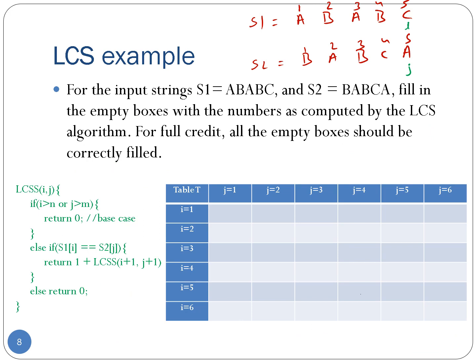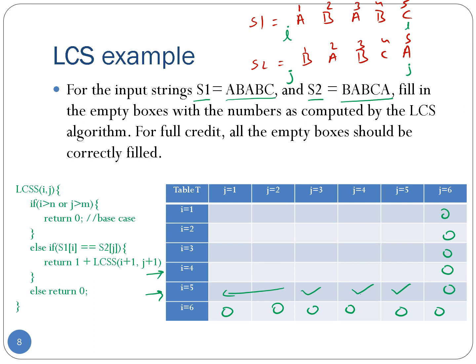Let's take an example to understand how this dynamic programming table fills out. Our input strings are s1 = a, b, a, b, c and s2 = b, a, b, c, a. Both strings have length 5, so the table is 6 by 6. We start by filling sentinel values: the last row (i=6) and last column (j=6) are all zeros. Next we fill the table bottom-up right to left, starting with row 5. We fill entry (5,5), then (5,4), (5,3), and so on, then move to row 4 starting from the right again.